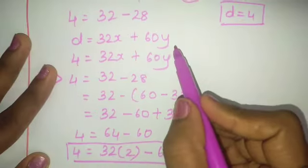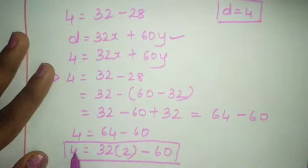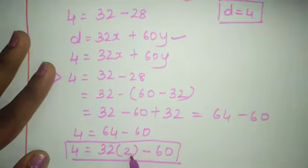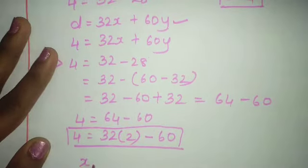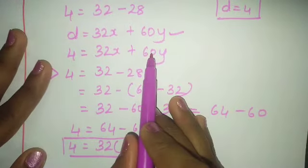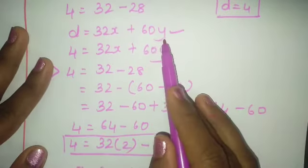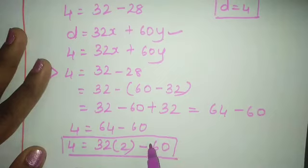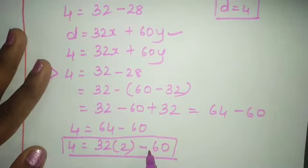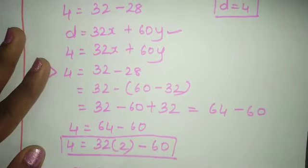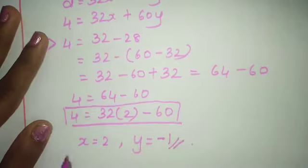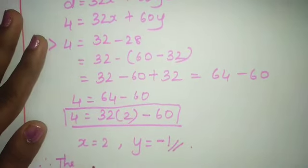Comparing with d = 32x + 60y: the coefficient of 32 gives x = 2. For y, since the 60 term has a minus sign and coefficient 1, y = −1.